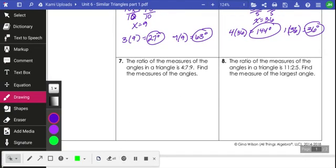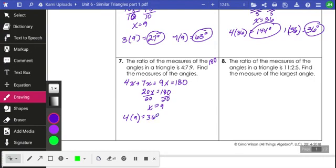Here's an extended ratio, 4 to 7 to 9. The ratio of the measures of the angles in a triangle is 4 to 7 to 9. Find the measure of each. The sum of angles in a triangle are 180 degrees. I know that 4x plus 7x plus 9x is going to equal 180 degrees. I can simplify: 4 plus 7 plus 9 is 20, so 20x equals 180. Divide by 20, so x equals 9. If I'm finding all three angles: 4 times 9 is 36 degrees, 7 times 9 is 63 degrees, and 9 times 9 is 81 degrees.